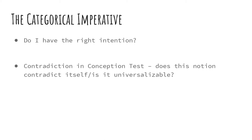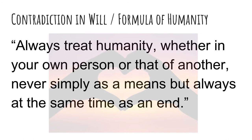To review, there are four parts to the categorical imperative. The first is intention: do I have the right intention? The second is the contradiction in conception test, or the universalizability standard: does this notion contradict itself? Can I repeatedly do it over and over again — is it universalizable? Those are the first two parts.